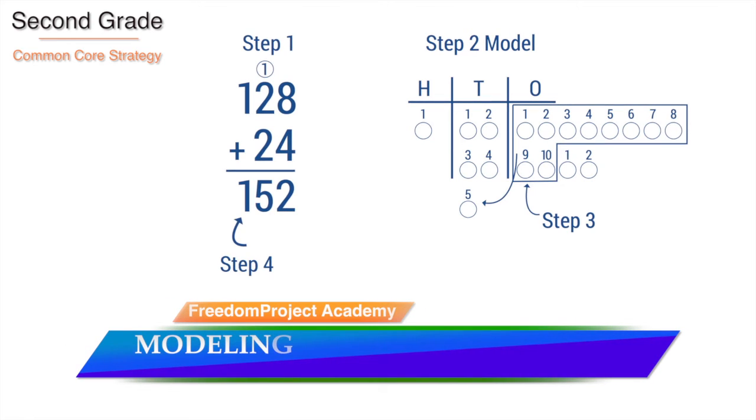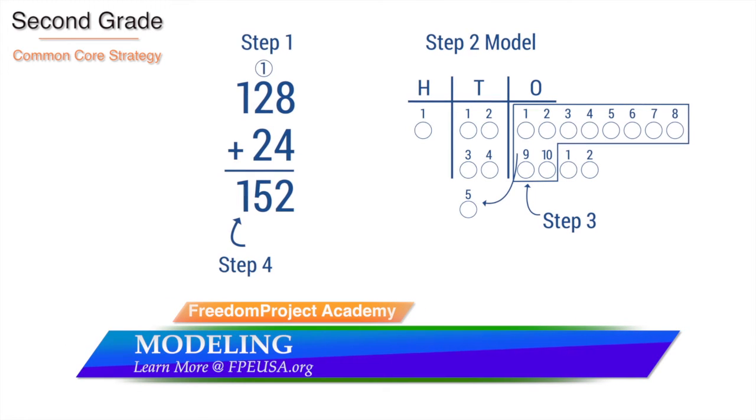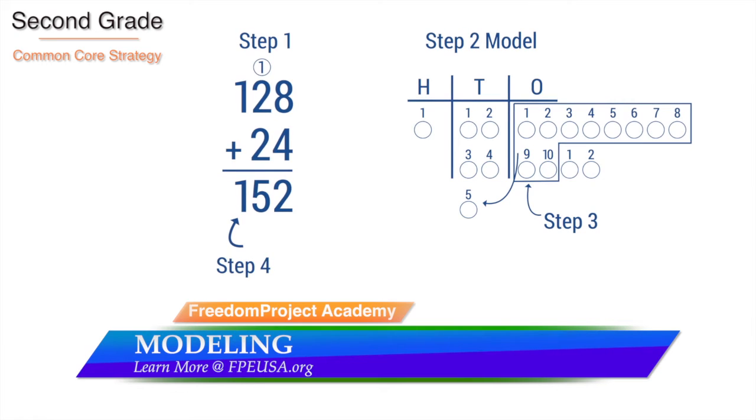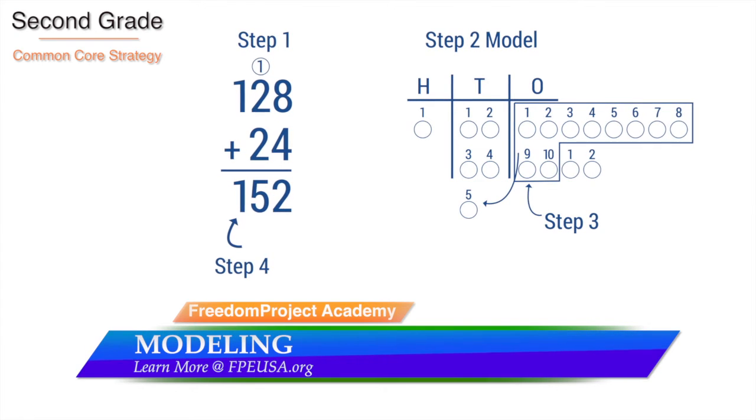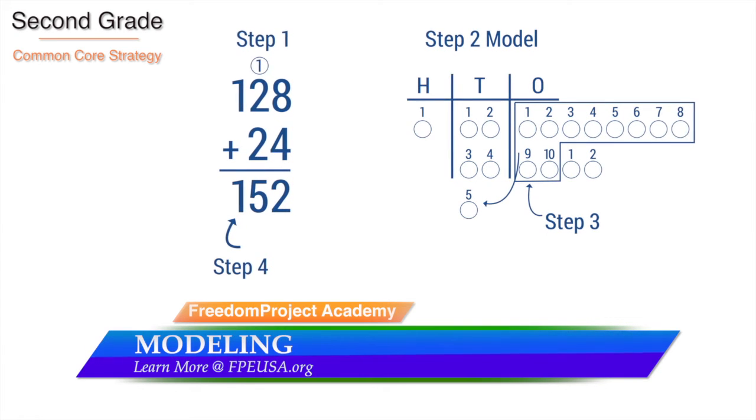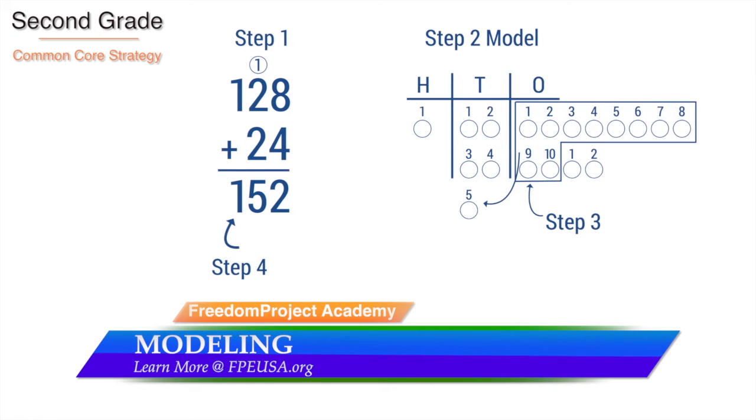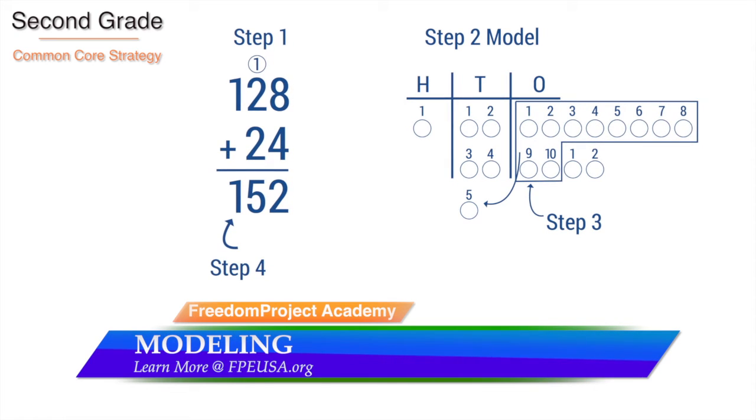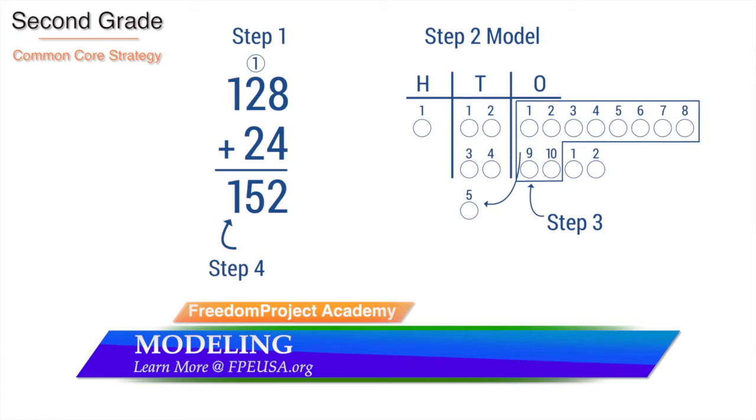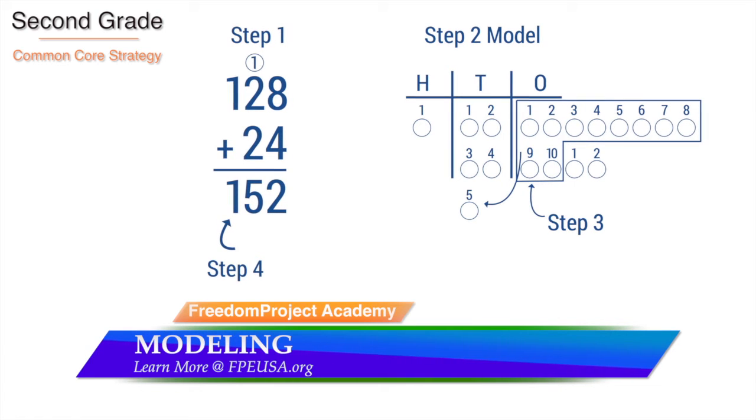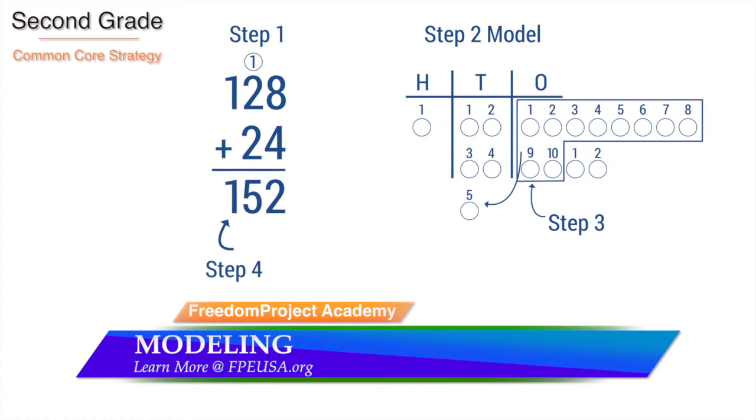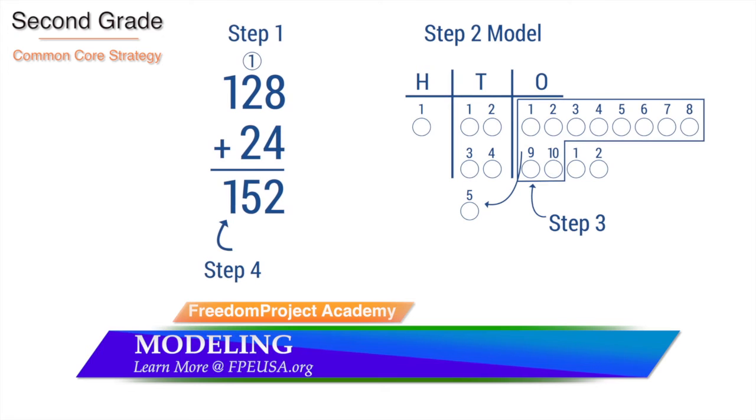One last second grade strategy for adding is modeling. It is very similar to base 10 blocks. Note the circles in each column are numbered, making the bundling of 10 robotic. These strategies address the development of higher level skills and are intended to water down arithmetic so all can succeed.